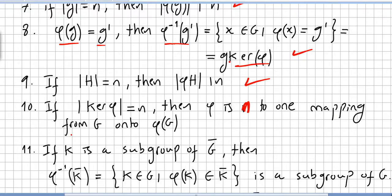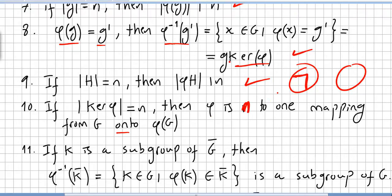If the order of the kernel of the homomorphism is n, then phi is an n-to-1 mapping from G onto phi of G — that is, a surjective mapping.